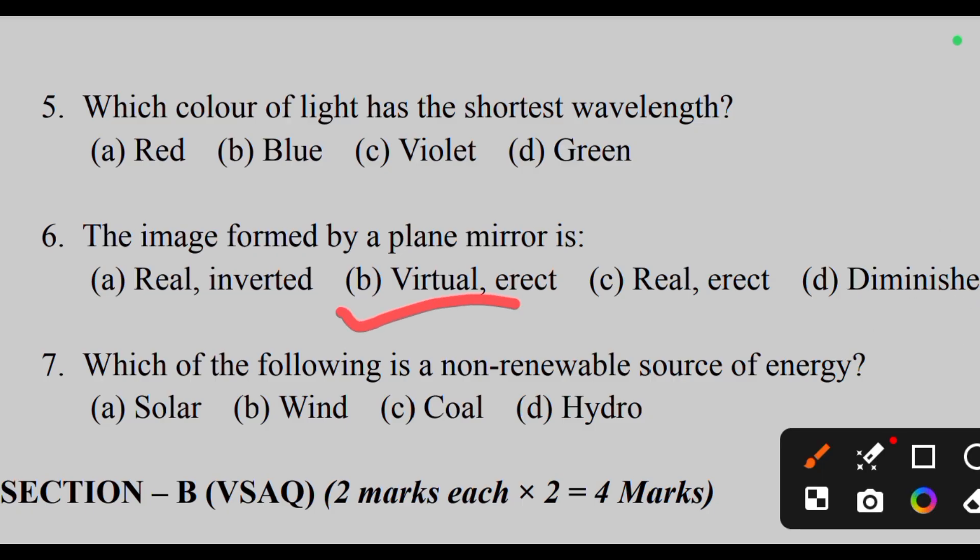Virtual, erect. Seventh question: Which of the following is a non-renewable source of energy? The answer is Coal.